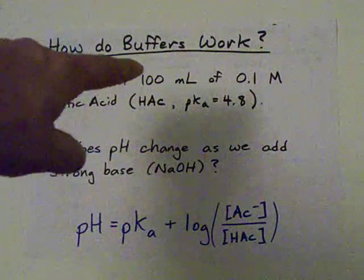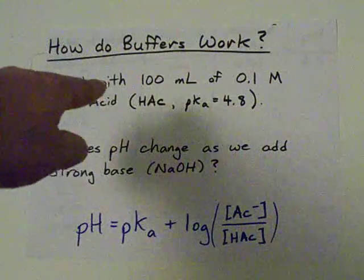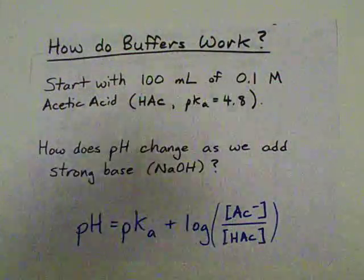Start with 100 milliliters of 0.1 molar acetic acid, pretty standard. Acetic acid I'm going to write as HAc, and the pKa is 4.8. Accepted.